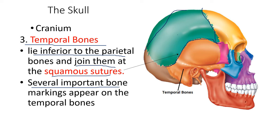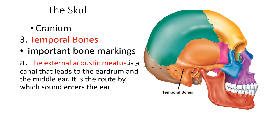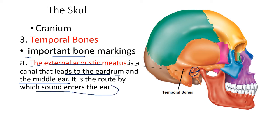The first important bone marking is the external acoustic meatus. This is where the ear canal leads to the eardrum. The ear canal is part of the bony labyrinth in the temporal bone. It is a canal that leads to the eardrum and the middle ear — it is the route by which sound enters the ear, traveling until it reaches the tympanic membrane.